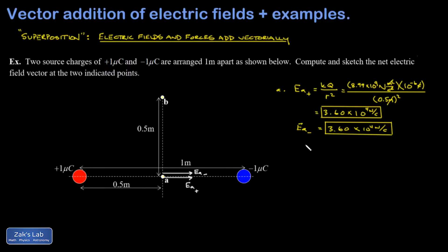All right, so then the magnitude of the electric field at point A is just going to be the sum of these two magnitudes because these two vectors point in exactly the same direction. So E_A is going to be 7.20 times 10 to the fourth newtons per coulomb pointing to the right.